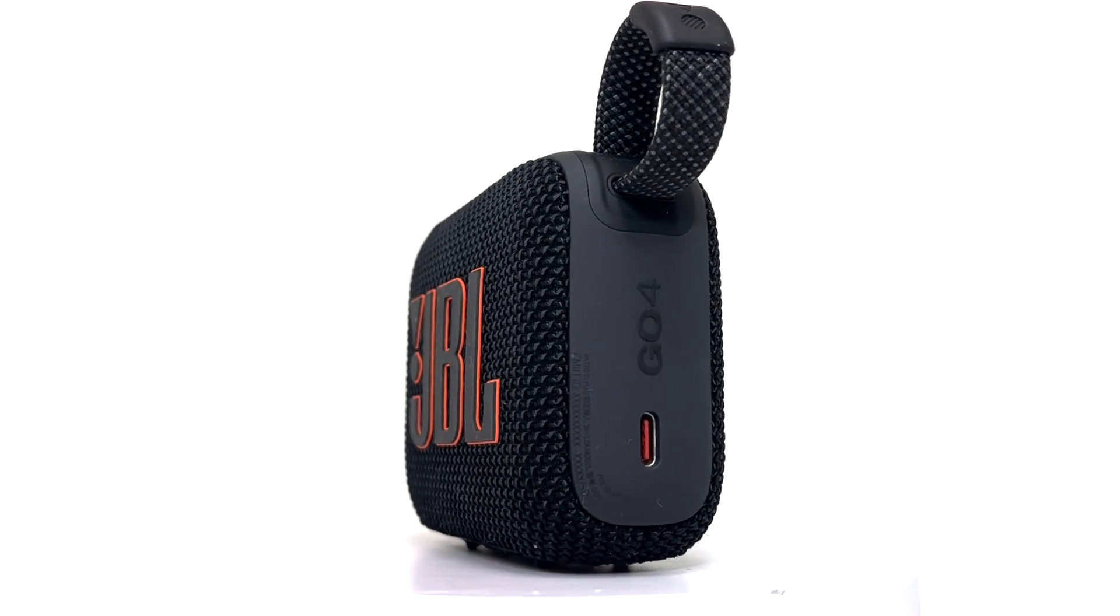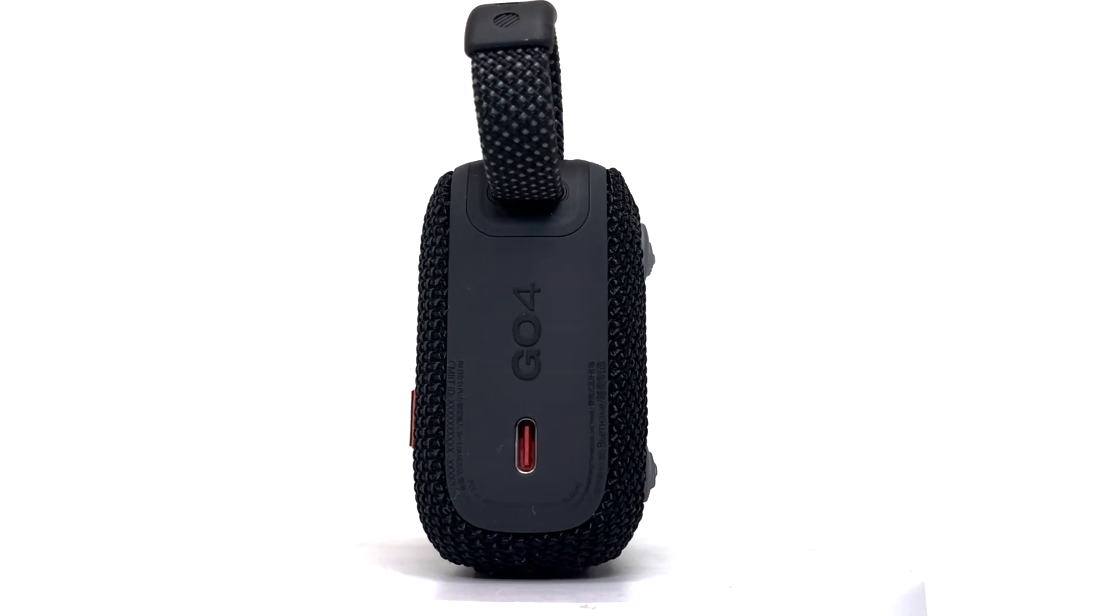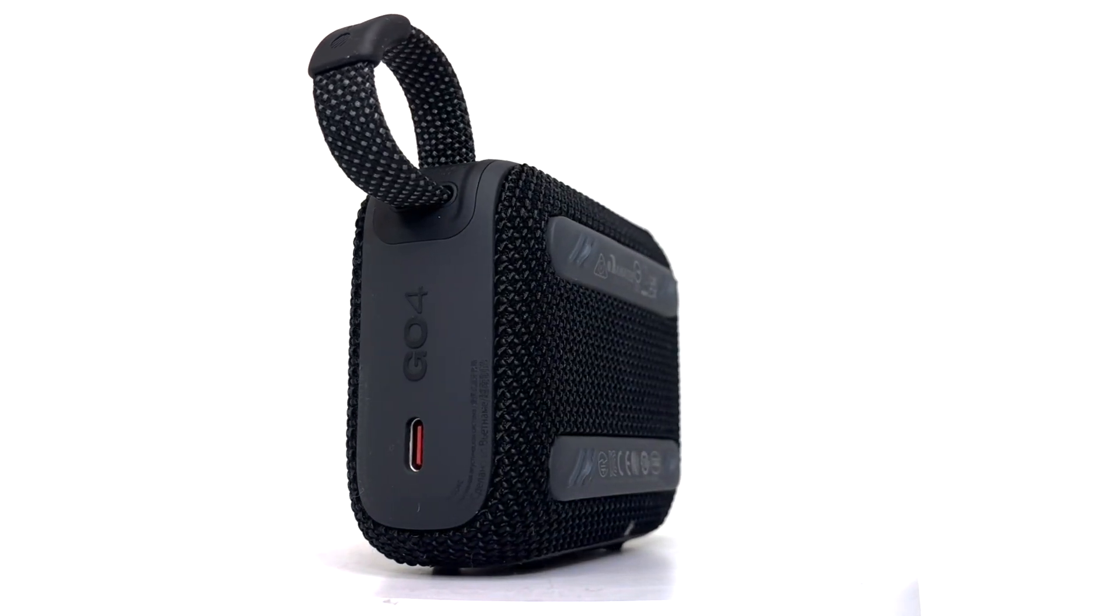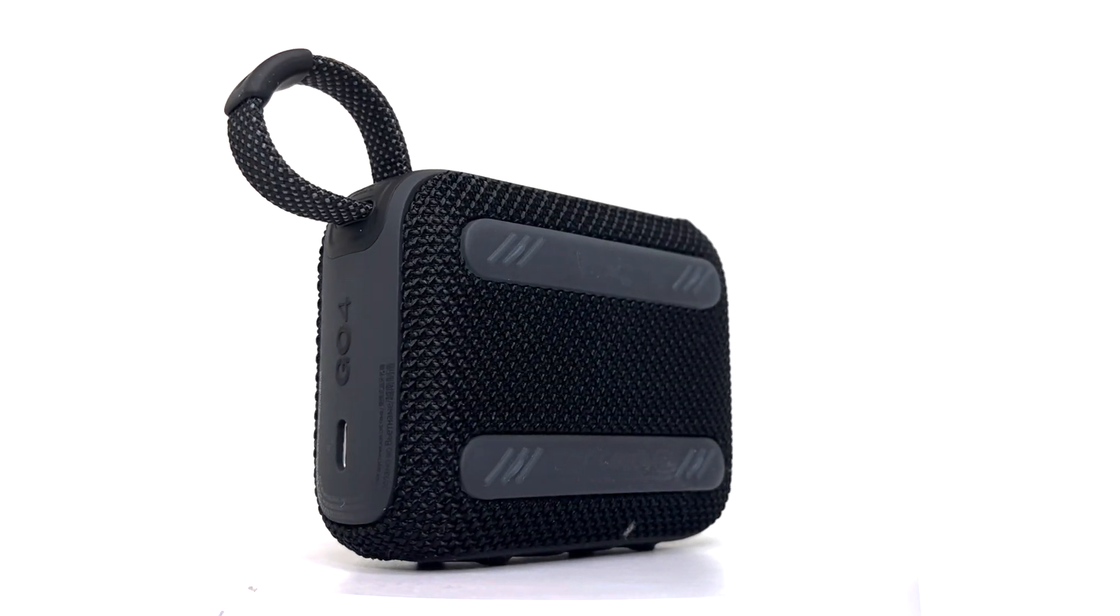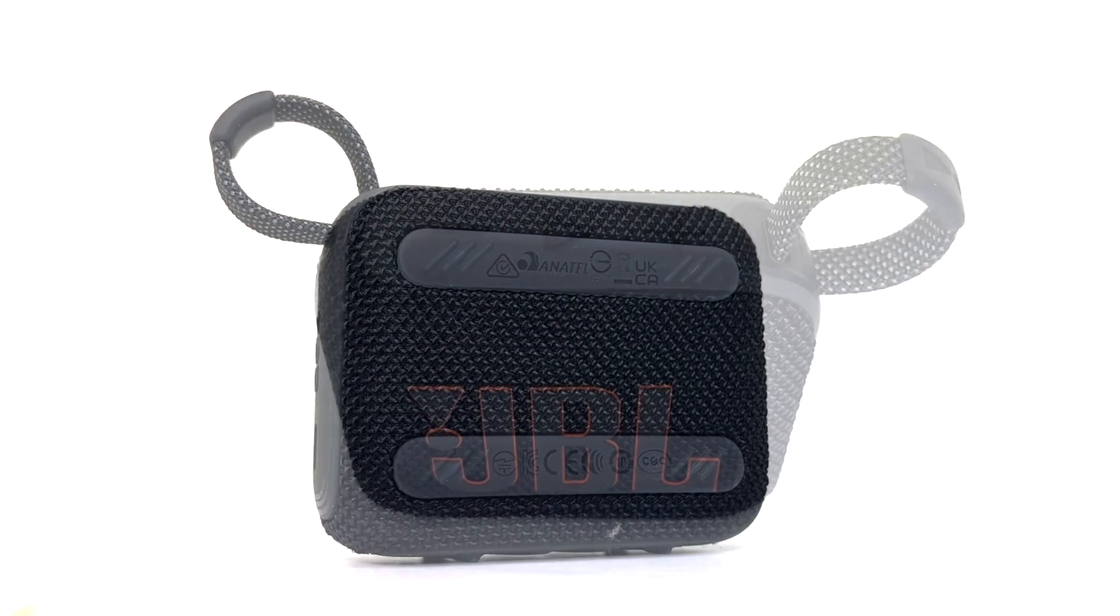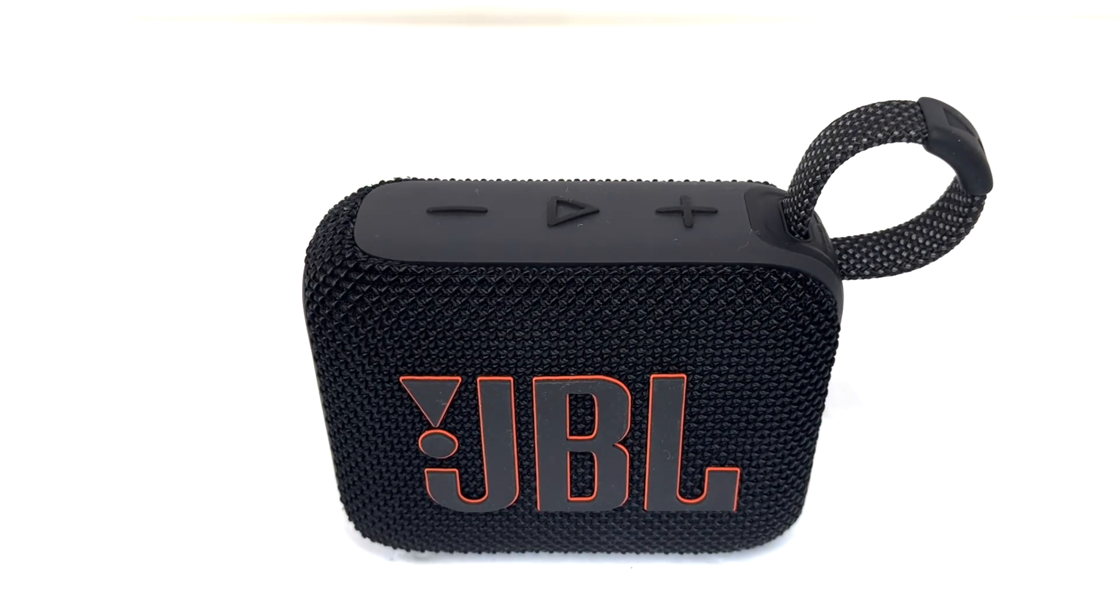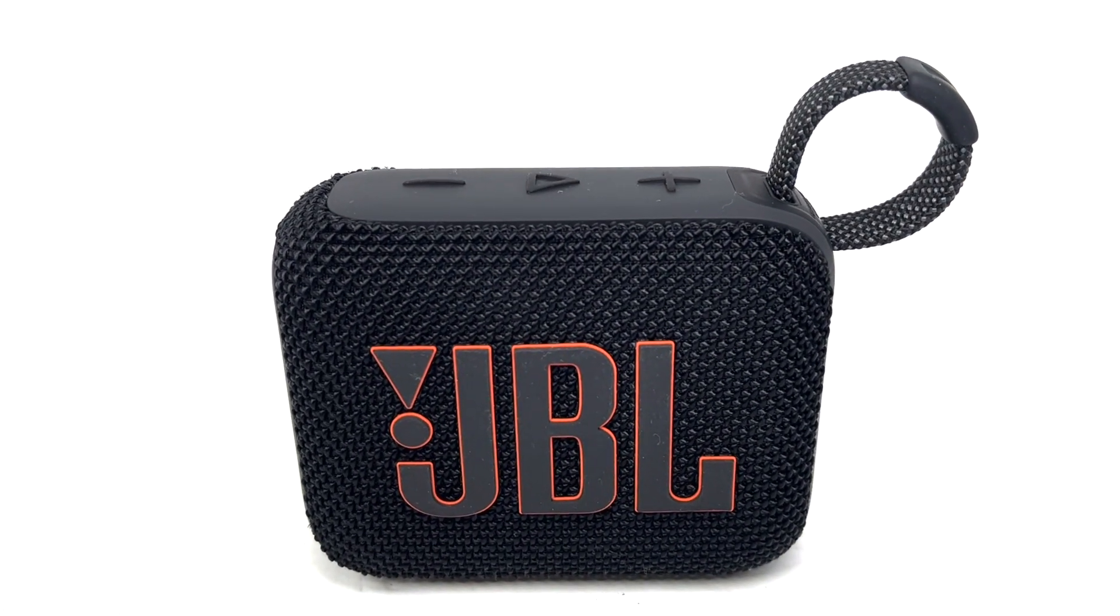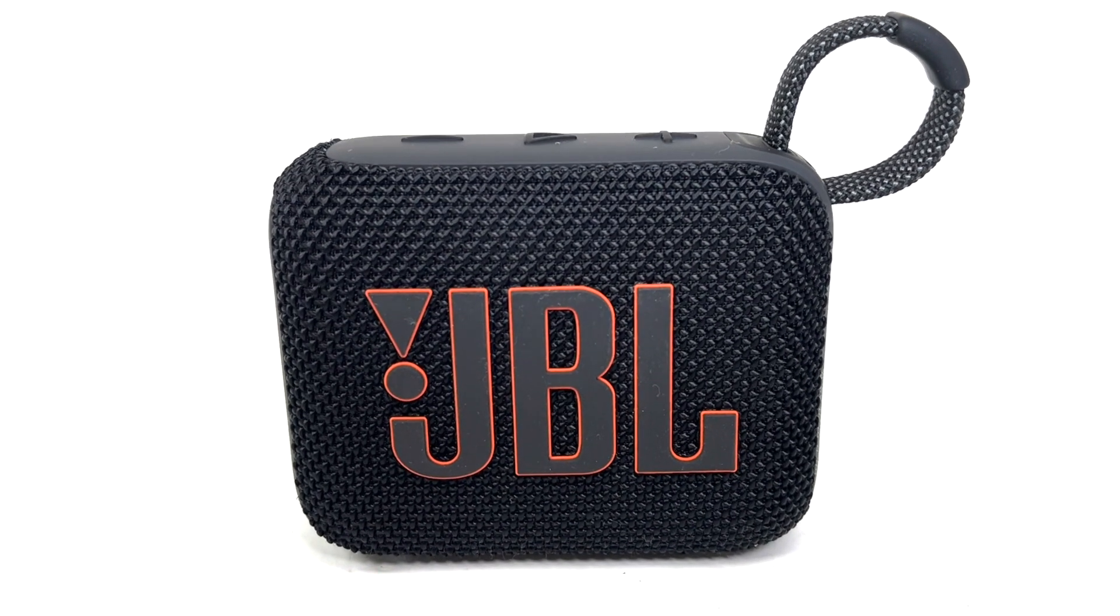With its fresh new design, the GO 4 measures 3.7 x 3 x 1.7 inches and weighs less than half a pound, making it very similar in size to the GO 3. The new look of the JBL GO 4 is both modern and stylish, featuring updated materials and a more robust build.